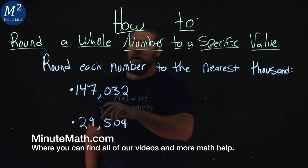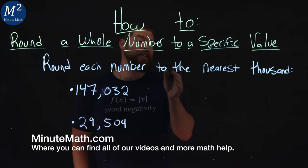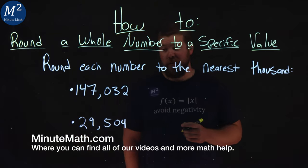We're given this problem here: round each number to the nearest thousand.